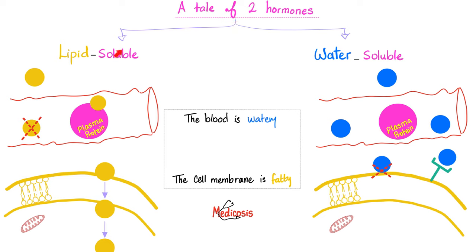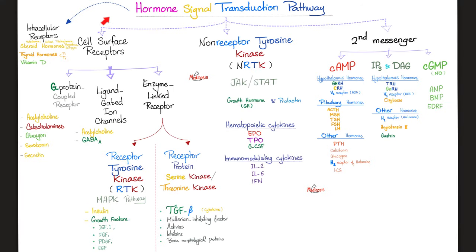A tale of two hormones. We have lipid-soluble hormones and water-soluble hormones. Today's topic deals with a water-soluble hormone acting on a non-receptor tyrosine kinase. We've previously discussed intracellular receptors for lipid-soluble hormones, cell surface receptors including G-proteins, ligand-gated ion channels like GABA, and enzyme-linked receptors including receptor tyrosine kinase (RTK) and receptor protein serine/threonine kinase like TGF-beta. Today's topic is the non-receptor tyrosine kinase, or JAK-STAT.